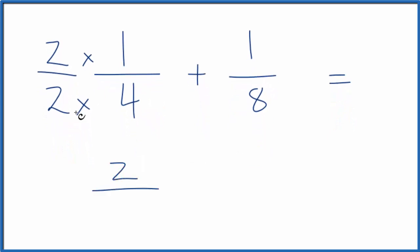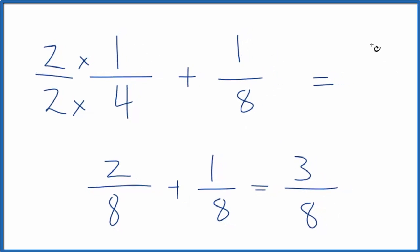So 2 times 1 is 2. 2 times 4 is 8 plus 1 eighth. We have the same denominator here. We just add 2 plus 1. That gives us 3 over 8. And 1 fourth plus 1 eighth—that's 3 eighths.